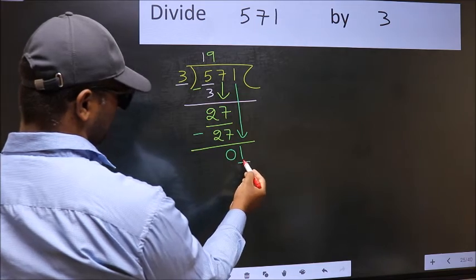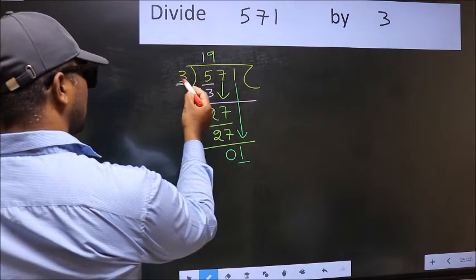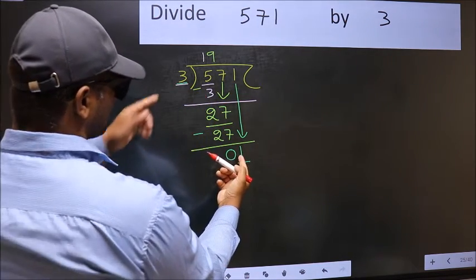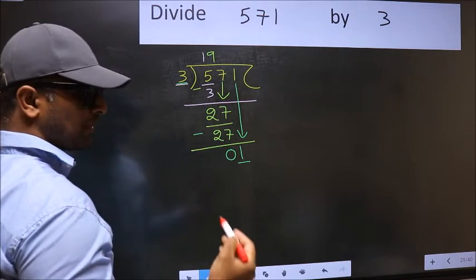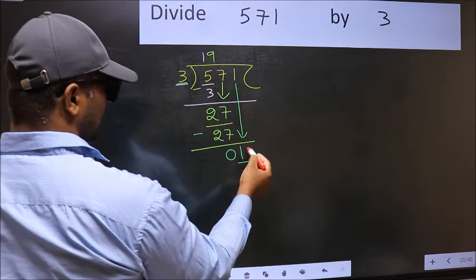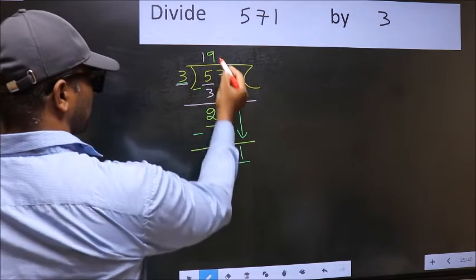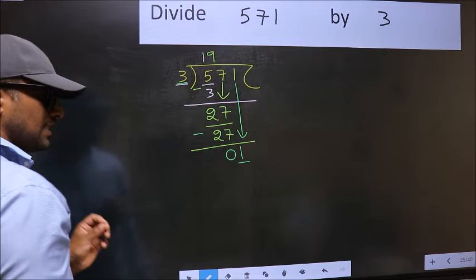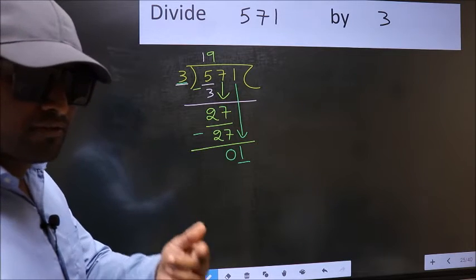Here we have 1 and here 3. 1 is smaller than 3. So what many do is they directly put a dot and take 0 here. Which is wrong.